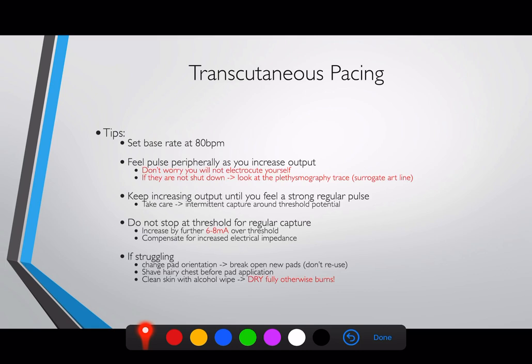A useful tip: if the patient isn't too shut down and not too cool in their peripheries, put a sats probe on and look at the plethysmography trace — the wavy line you see next to the sats number. This shows each cardiac beat and can be used as a surrogate for heart rate and also blood pressure. Always try to look at that plethysmography trace; it's very useful, especially if you don't have invasive arterial monitoring when the patient initially comes in.